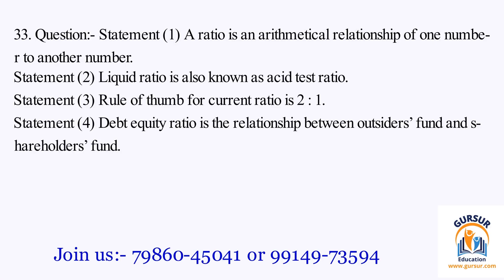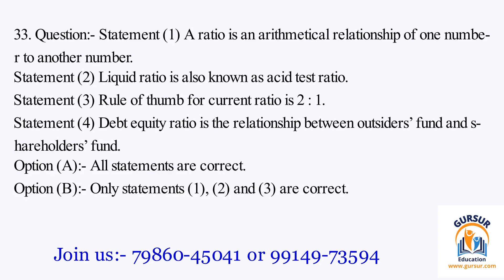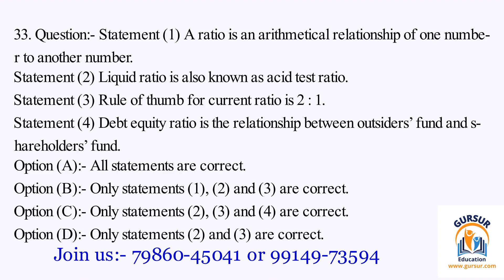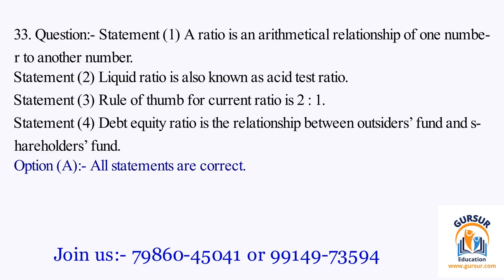Question number 33. Statement 1: A ratio is an arithmetical relationship of one number to another number. Statement 2: Liquid ratio is also known as asset test ratio. Statement 3: Rule of thumb for current ratio is 2:1. Statement 4: Debt equity ratio is the relationship between outsiders' fund and shareholders' fund. Option A: All statements are correct. Option B: Only statements 1, 2 and 3 are correct. Option C: Only statements 2, 3 and 4 are correct. Option D: Only statements 2 and 3 are correct. The right answer is Option A, that is all statements are correct.